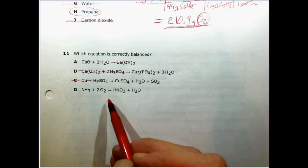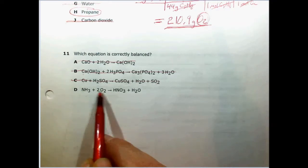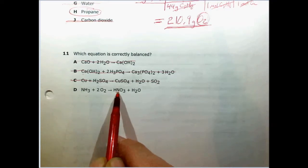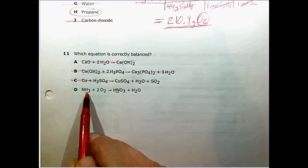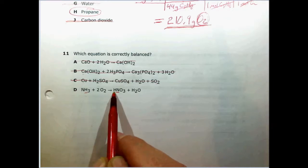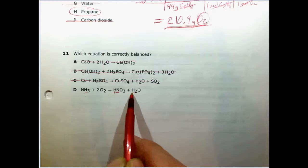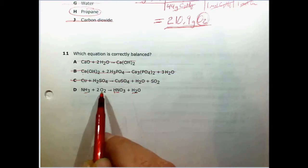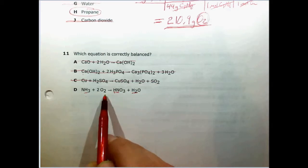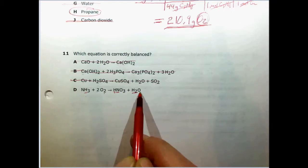It must be this one, but let's check anyway. One nitrogen and one nitrogen. We have three hydrogens here and on the other side we have one hydrogen plus two more in the water, so we're still looking good. Here we have two oxygens and two of each in the molecule, so two times two is four. We have three plus one is four. So D must be our correct answer.